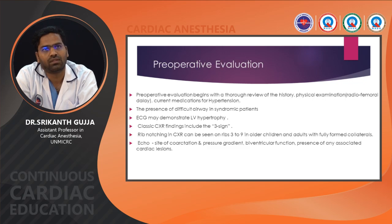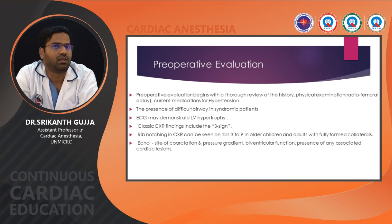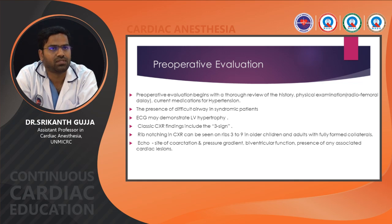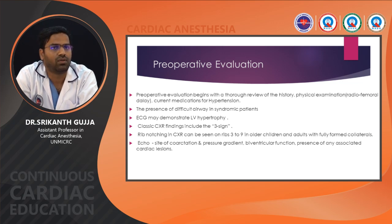Pre-operative evaluation begins with review of history, physical examination, radio-femoral delay, and current medications for hypertension. Note the presence of difficult airway in syndromic patients. ECG may demonstrate LV hypertrophy. Chest X-ray findings include the '3 sign' and rib notching. Echocardiography can assess the site of coarctation, or it can be seen on angiogram.